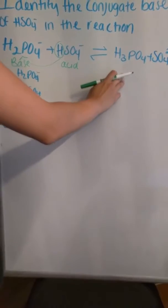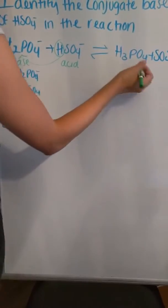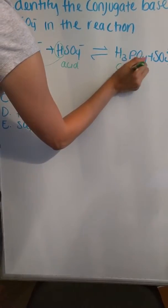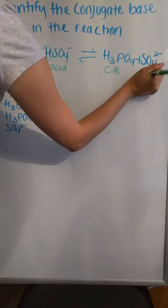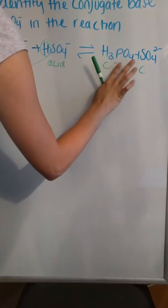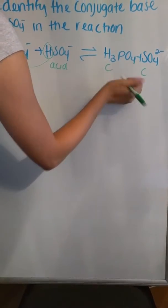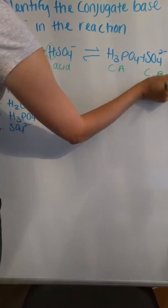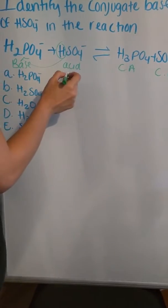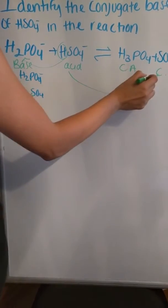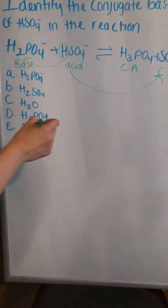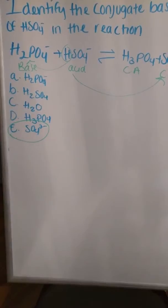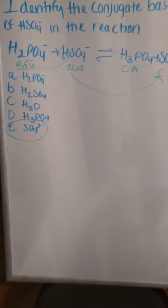On the product side, H3PO4 is the conjugate acid and SO4²⁻ is the conjugate base. So the conjugate base of HSO4⁻ is SO4²⁻ (2-), and the answer is E.